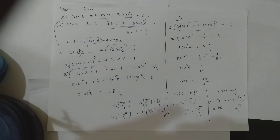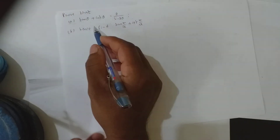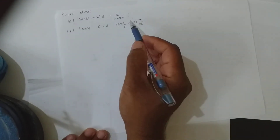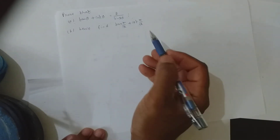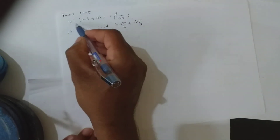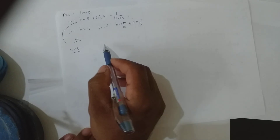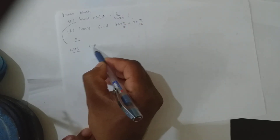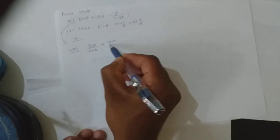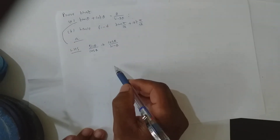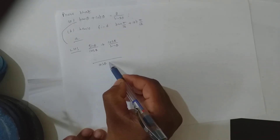Let us see the next sum. Prove that tan θ + cot θ = 2/sin 2θ. Hence find tan(π/12) + cot(π/12). Taking the LHS: tan θ = sin θ/cos θ and cot θ = cos θ/sin θ.